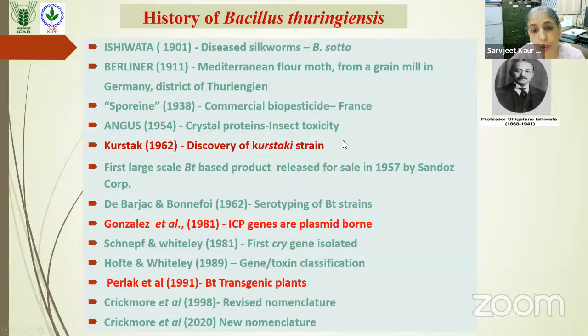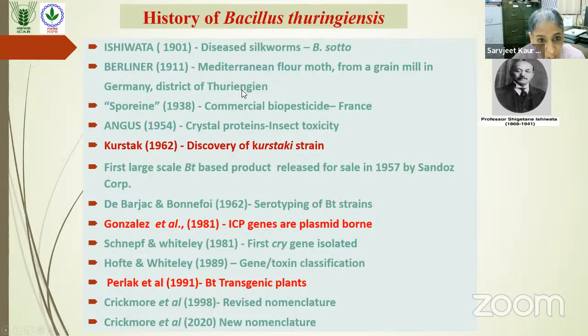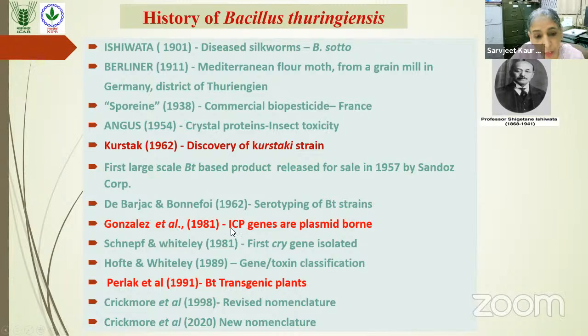A little about history: Bt has a more than a century-long history. It was first discovered from diseased silkworms and dead flour moths in Germany in the district of Thuringia, from which it derives its name. The first commercial biopesticide was developed in 1948. Subsequently, the kurstaki strain was discovered, which now forms the basis of most Bt-based biopesticides. Molecular work was done showing that insecticidal crystal proteins are plasmid-encoded, and as the number of genes increased, a classification system was evolved and Bt transgenic plants were developed.